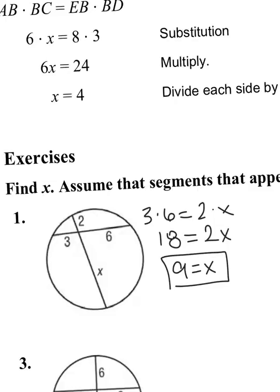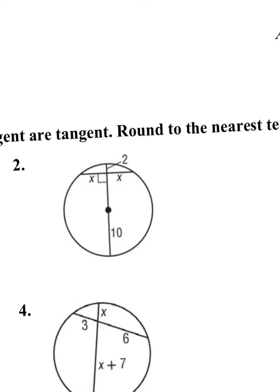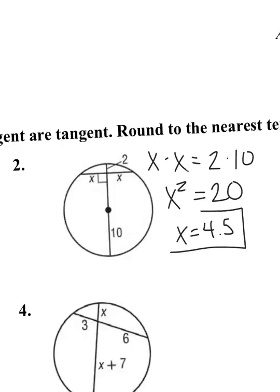Now we'll move on to question number two. This time my one chord is X and X, so I'm going to multiply X times X equals 2 times 10. X times X is X squared, 2 times 10 is 20. How do I get the X by itself? The opposite of squaring something is square rooting. X equals the square root of 20. Rounding to the tenth place, X equals 4.5.